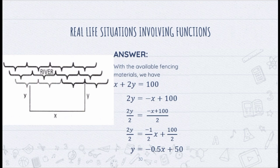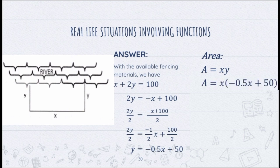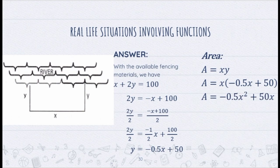With this value of Y, we can now solve for the function involving the area. Recall that the area of a rectangle is height times width. In our figure, we use X and Y for height and width, so our area is X times Y. Since the problem requires the answer in terms of X, we substitute Y with negative 0.5X plus 50. Multiplying X to each term gives us the final answer: A of X equals negative 0.5X squared plus 50X.